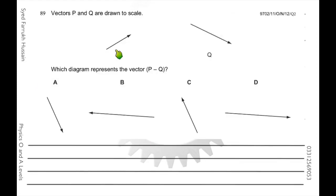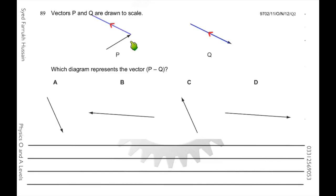For vectors P and Q, find P minus Q, which equals P plus (minus Q). Minus Q has the same magnitude as Q but in the opposite direction. Draw minus Q from the head of P. The resultant is from the tail of P to the head of minus Q. This gives the resultant P minus Q, which corresponds to option C.